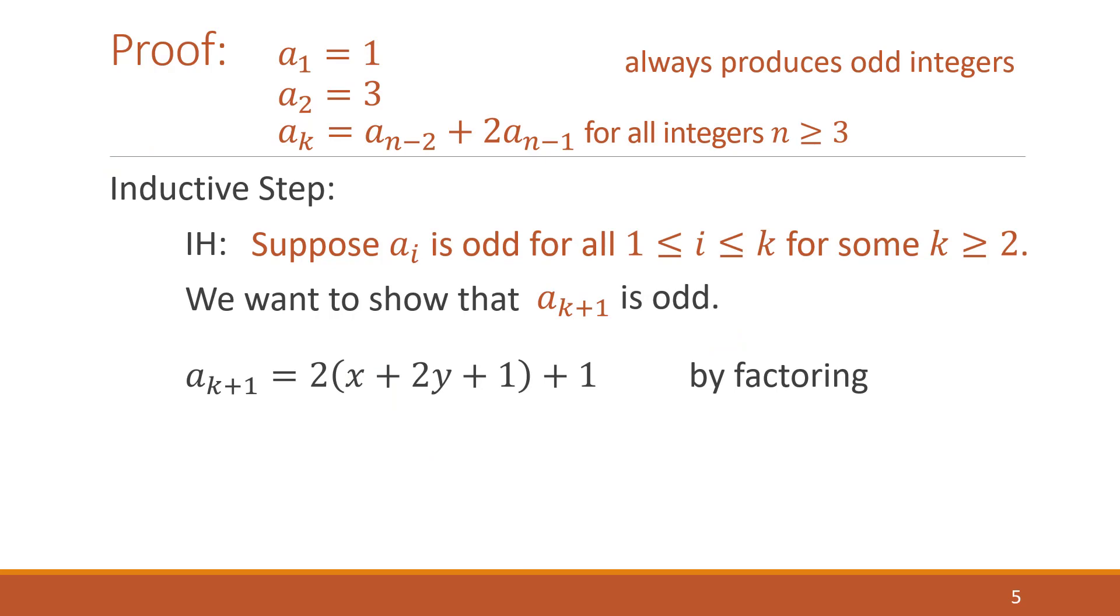So first, what we're going to do is we're going to rename this as some variable z. And we're going to notice that z is an integer under the integer closure properties. Remember, this is a necessary step. Do not skip this step.